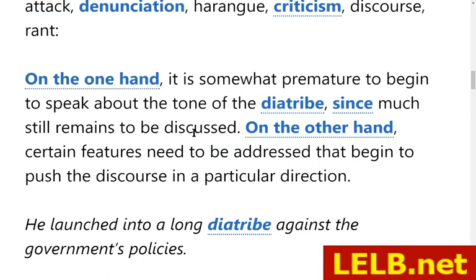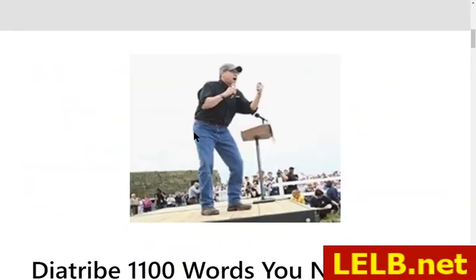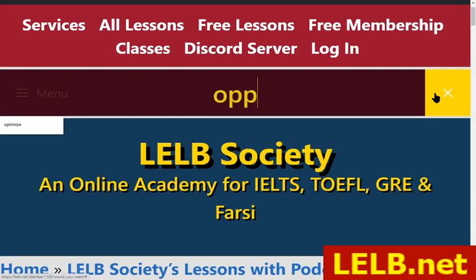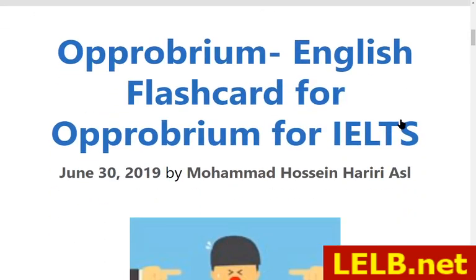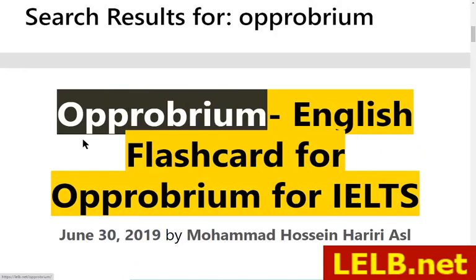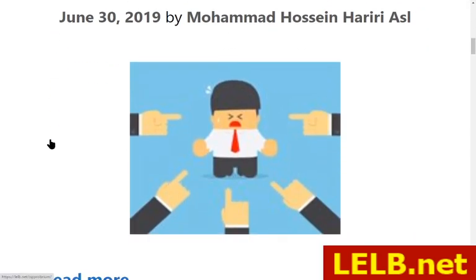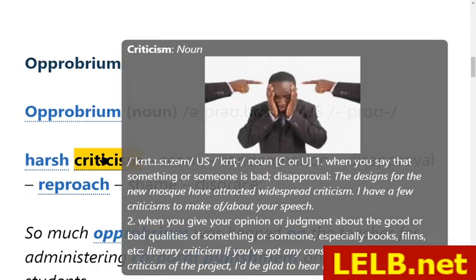The next word is opprobrium. Opprobrium is a kind of severe criticism. For example, we say 'to heap opprobrium against somebody' — heap, H-E-A-P — or 'let out opprobrium against or toward somebody.' You can also click on that to access all the cool features, and if you don't know how to pronounce a word, you can do that too.